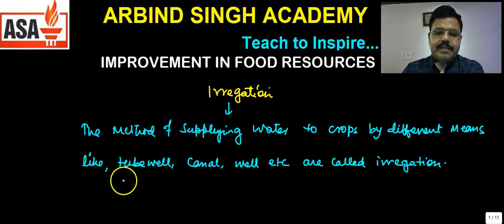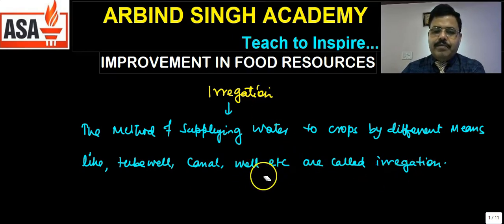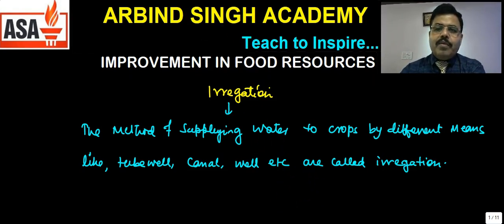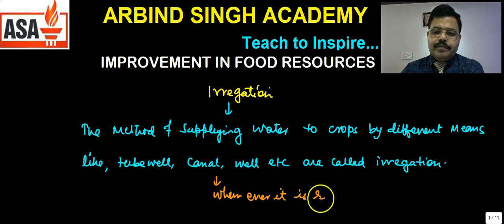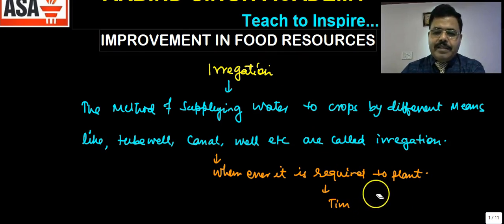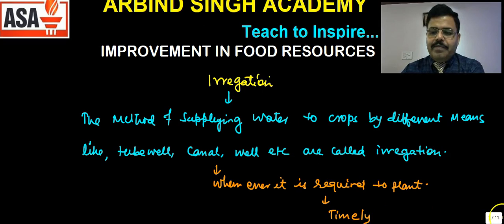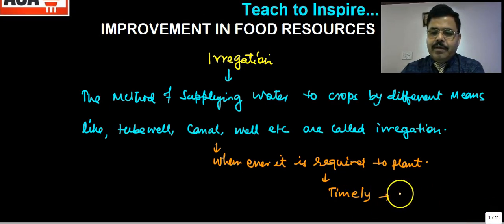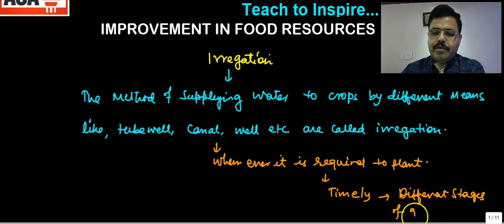By different means such as tube wells, canals, wells, and ponds, if you supply water whenever it is required to the plant — timely, at different stages of growing of plants — that is called irrigation.